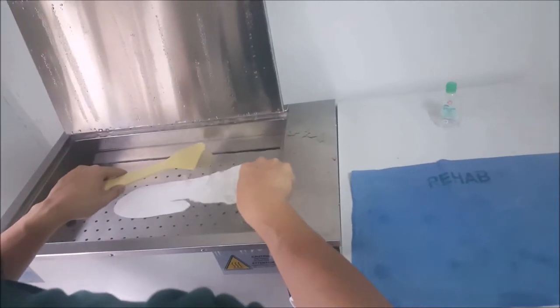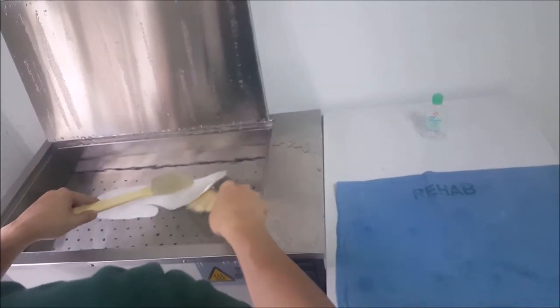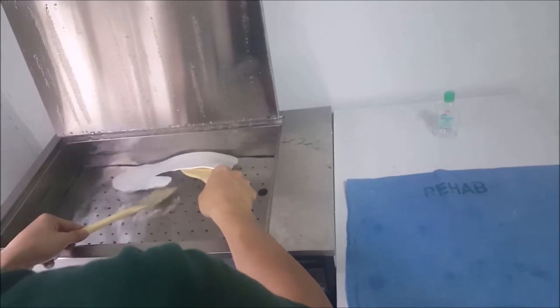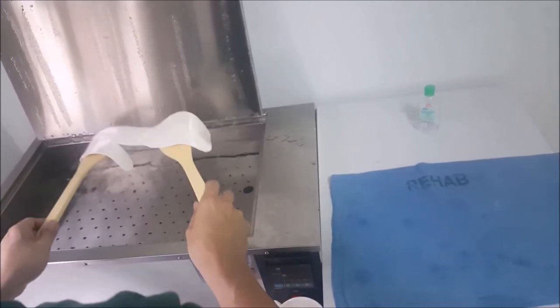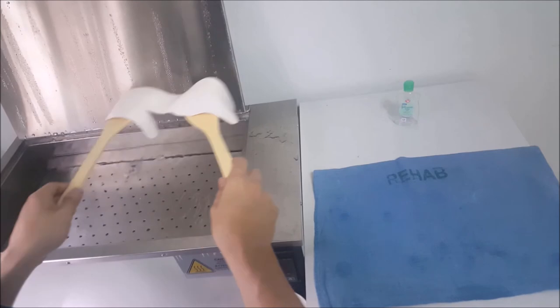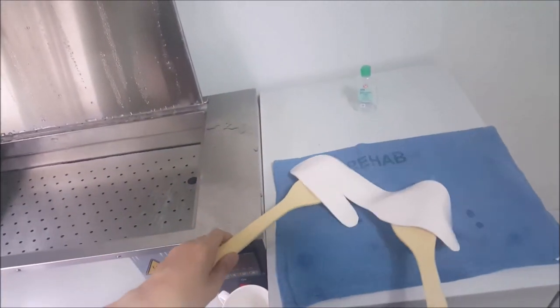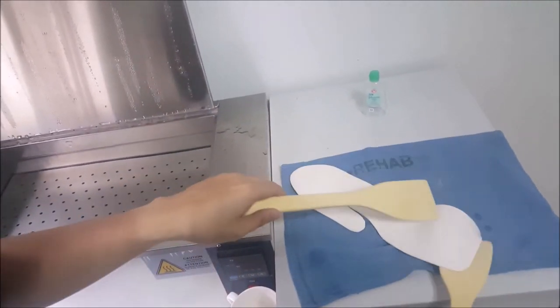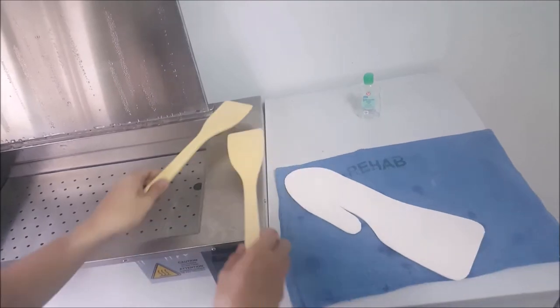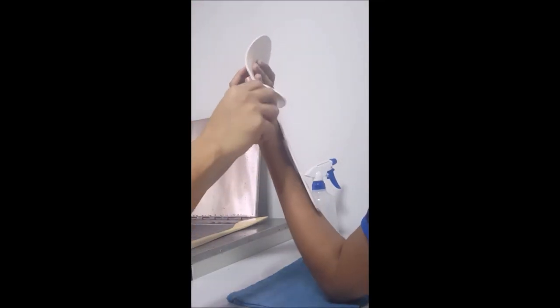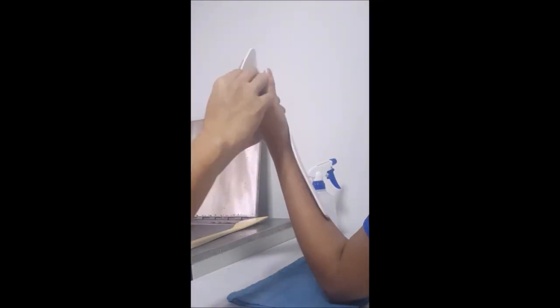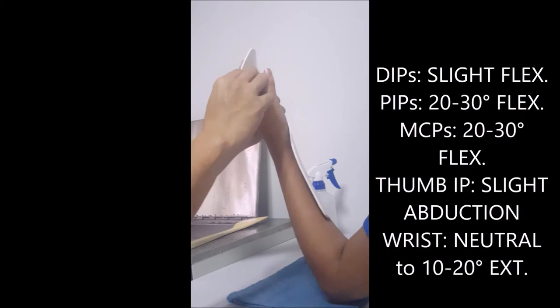Molding: In getting the thermoplastic out, you may use a splint strainer or flat spatula to avoid stretching it and making unnecessary marks. Position the patient's hand and place the thermoplastic. Please see the screen for the specific joint positions.